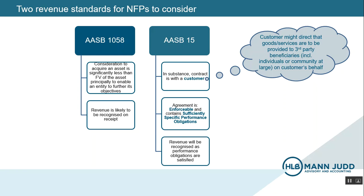An NFP will be accounting for income under AASB 15 where three things exist. There's a contract with a customer — and it's important to note that the customer will be the organization providing the asset. For example, the government in the case of a government grant. But the customer does not necessarily need to receive the goods or services under the contract; the asset provider can direct the goods or services to be provided to a third party, for example, a group of beneficiaries or the community more generally.